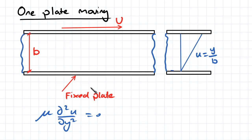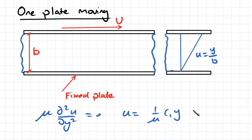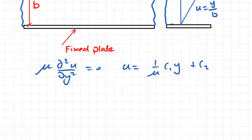We'll come to this same equation again, but what's going to change is our boundary conditions. If we integrate that twice we'll find that u is equal to 1 over the viscosity multiplied by c1·y plus c2. Then what we want to do is use our boundary conditions.